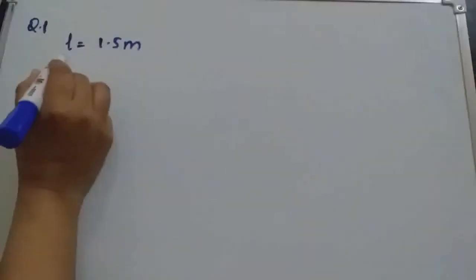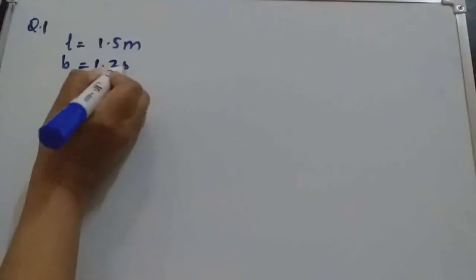Question number 1: A plastic box 1.5 meters long and 1.25 meters wide. That means length is 1.5 meters and breadth is given as 1.25 meters.